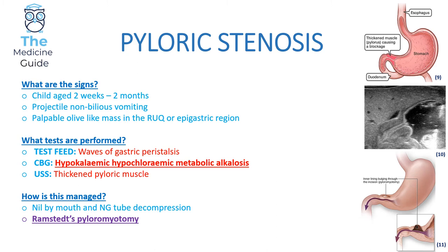In terms of management, we ensure patients are nil by mouth, perform NG tube decompression, and the definitive surgical intervention is Ramstedt's pyloromyotomy. That's something you need to be aware of for your exams — there aren't many conditions at medical school level where you need to know the surgical name, but for pyloric stenosis you do. Essentially a longitudinal incision is made, opening up a way to divert food past the pylorus into the duodenum, helping to prevent further projectile vomiting.